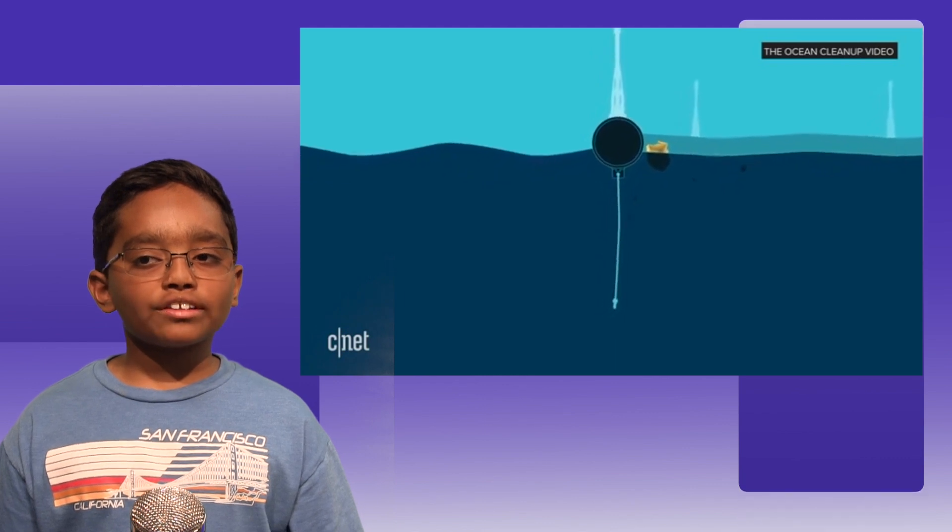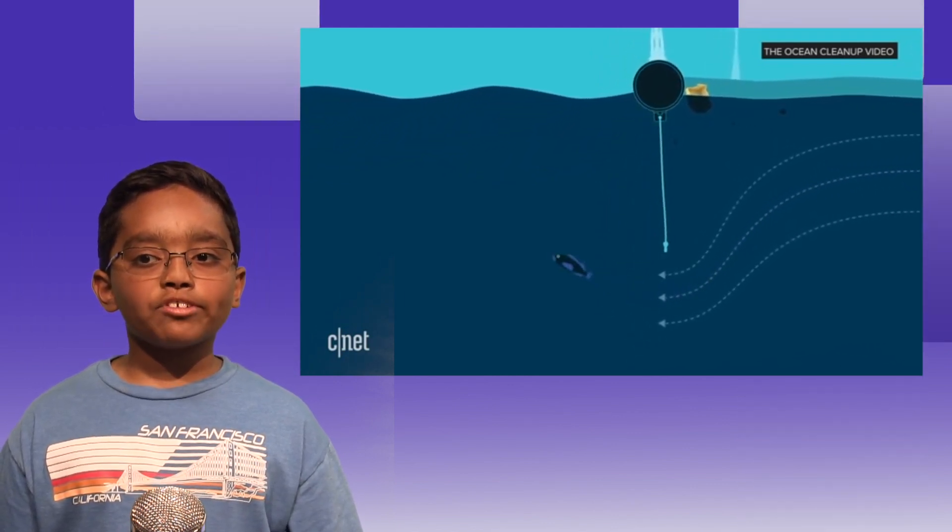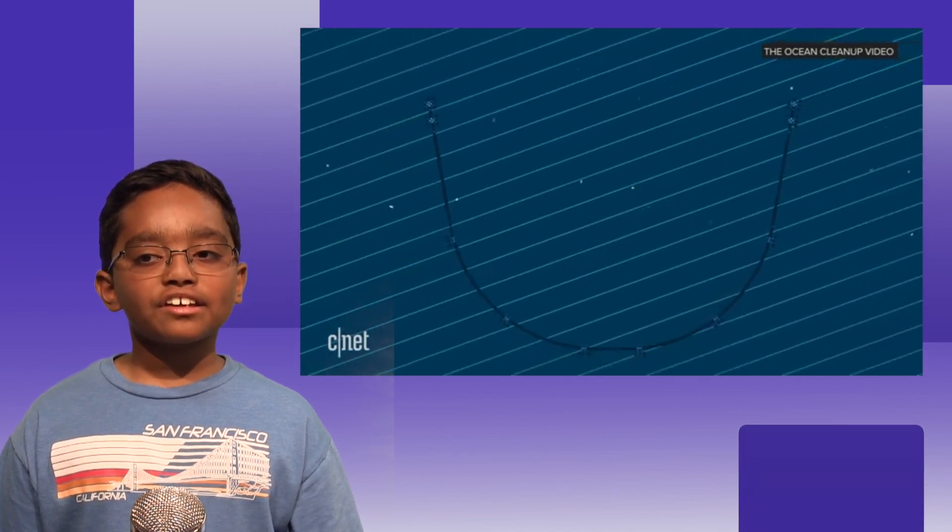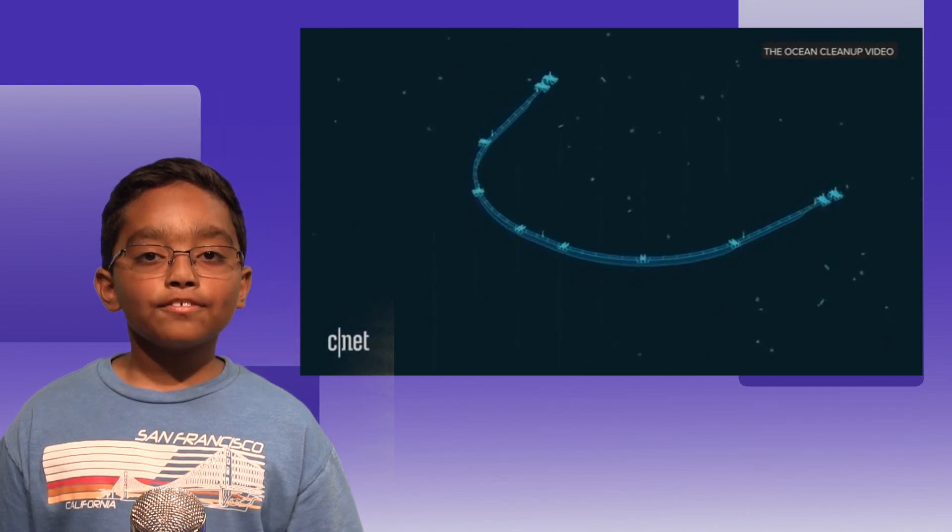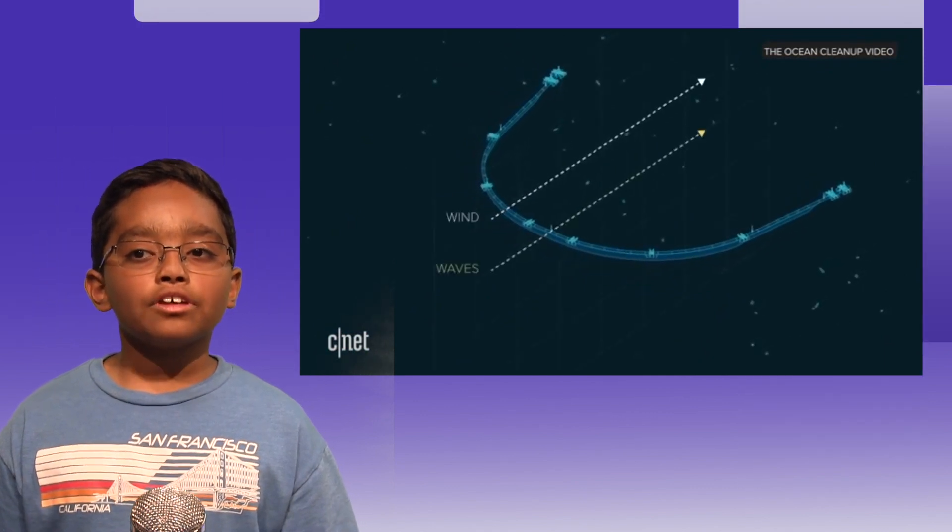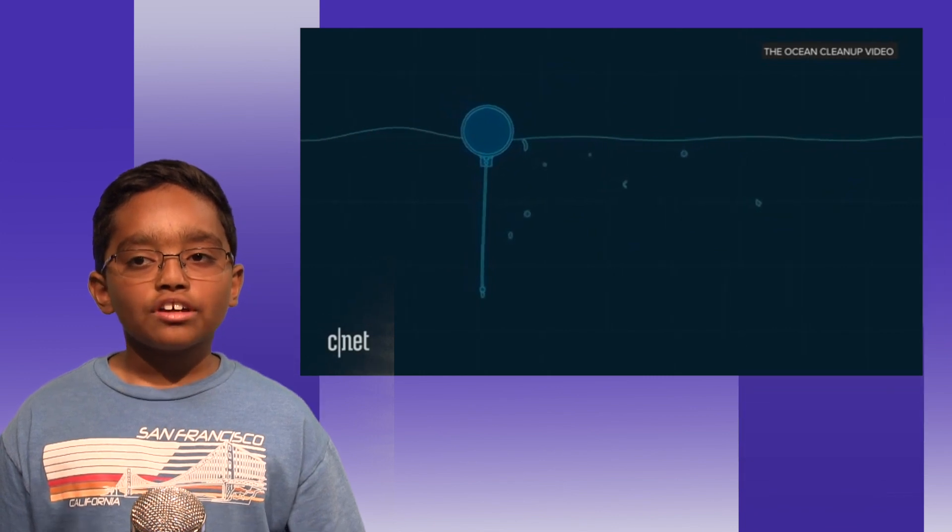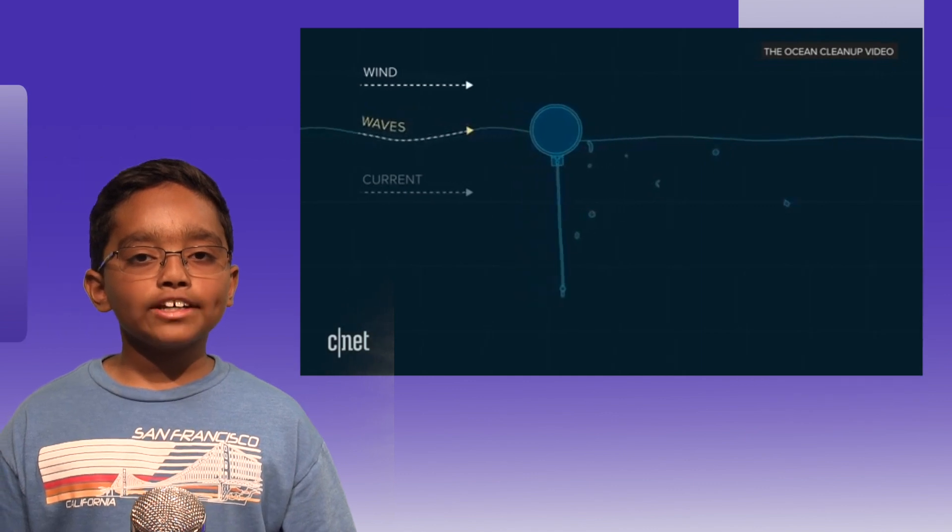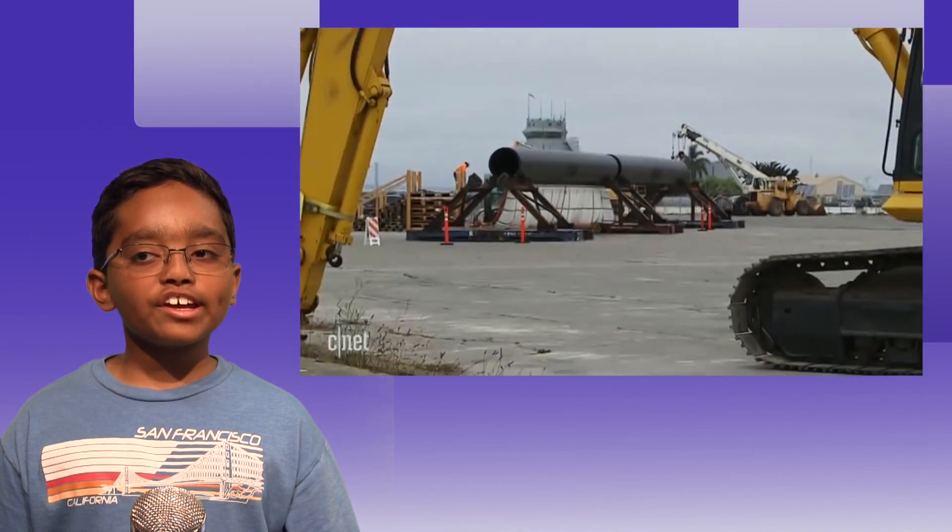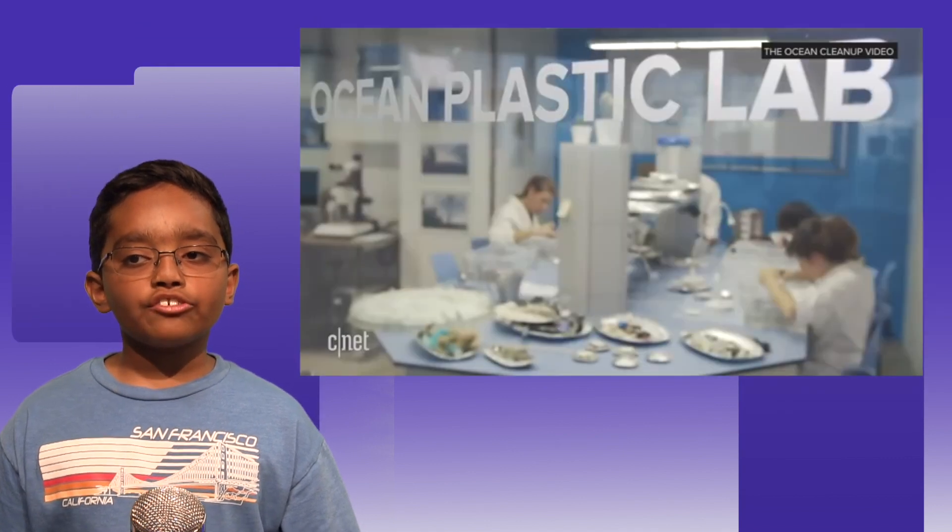After discovering the patch in the 90s, scientists said that it would take up to a thousand years to clean it up. But Slat quickly made a name for himself after he presented a TEDx talk, in which he claimed that he could do it in less than 10 if he could get a special machinery built. Though his claim called many skeptics to raise their eyebrows, Slat dropped out of college so he could bring his plans to life.